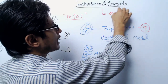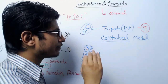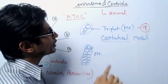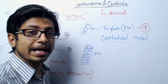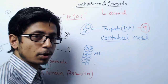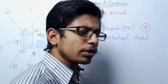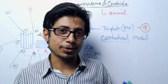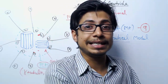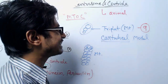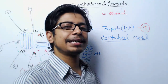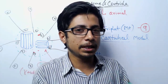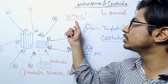This whole idea of centrosomes and centrioles is found only in animal cells. In plant cells and fungi, we don't see centrosomes — not at all. So the question is: if plant cells don't have centrosomes and centrioles, how could they divide? It turns out they have a similar structure known as MTOC.